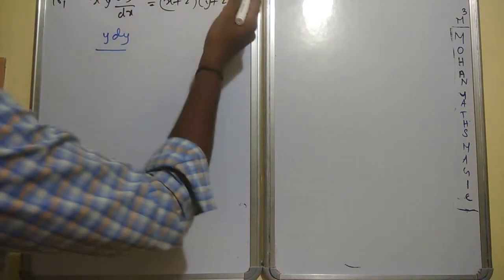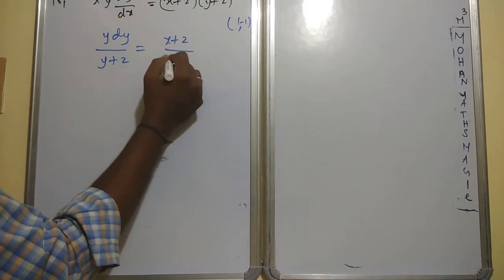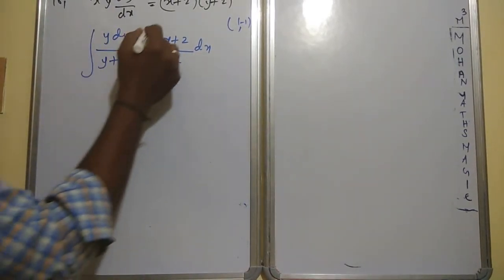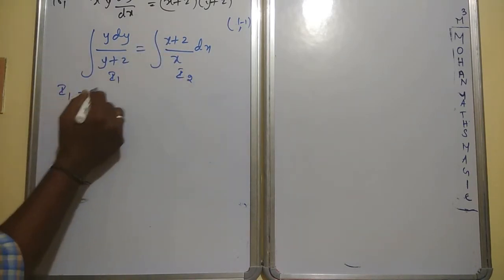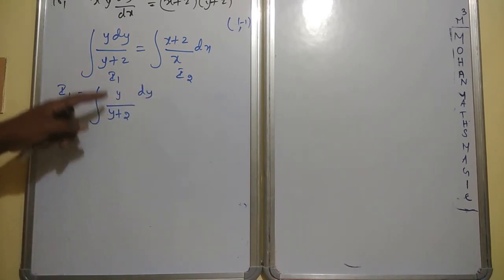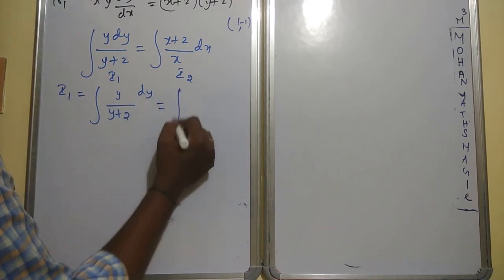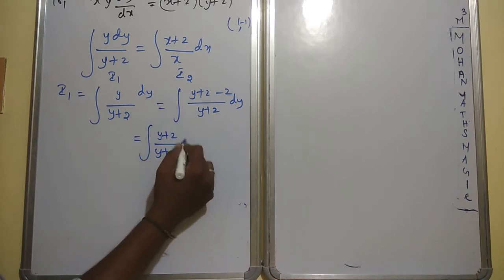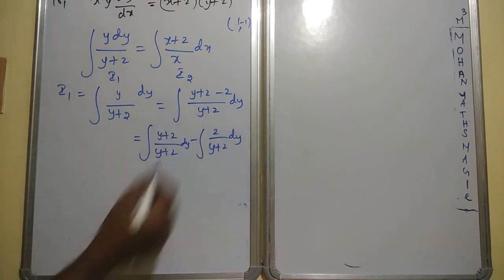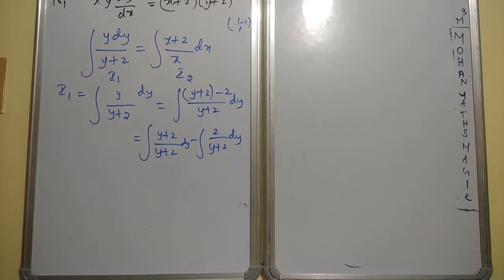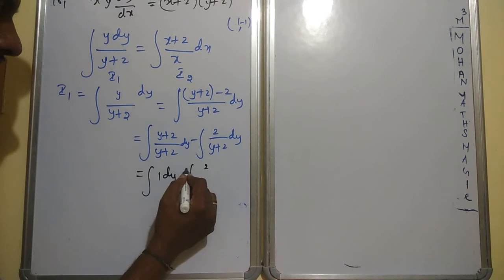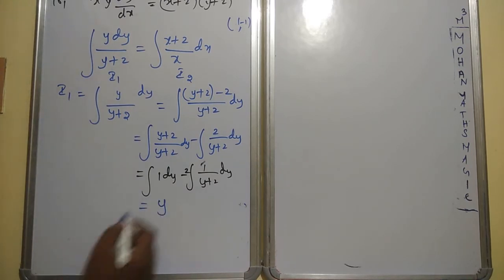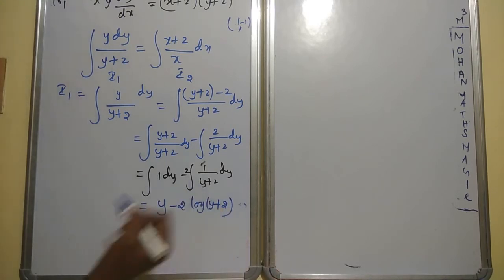Separating: y/(y+2) dy = (x+2)/x dx. Integrate both sides as I1 and I2 separately. I1 = ∫y/(y+2) dy. Using the technique of splitting: write numerator as (y+2) - 2 over (y+2), so I1 = ∫1·dy - 2∫1/(y+2)dy = y - 2·log(y+2).